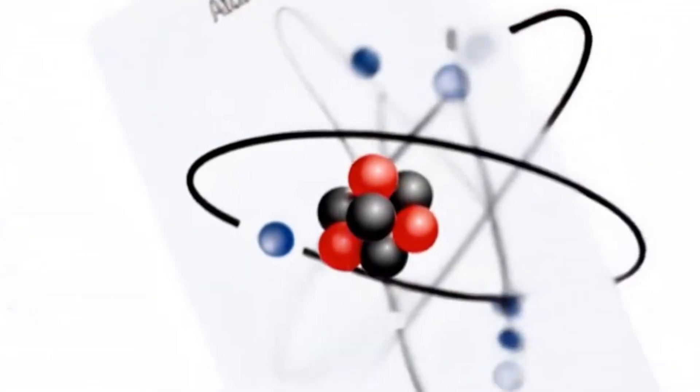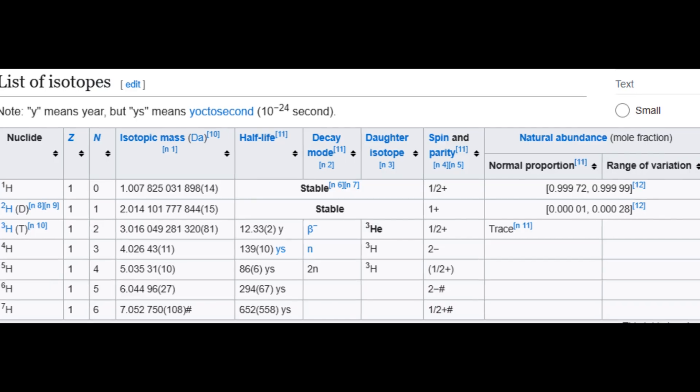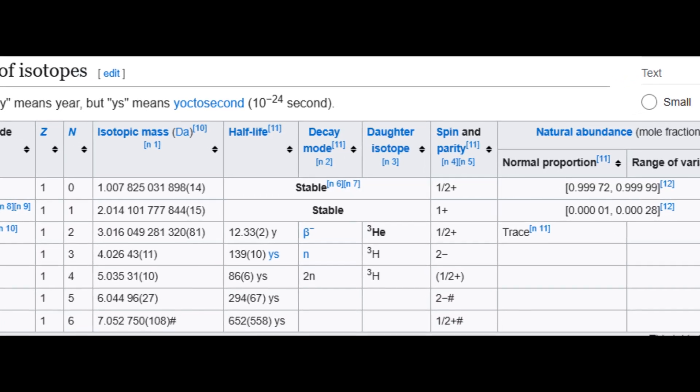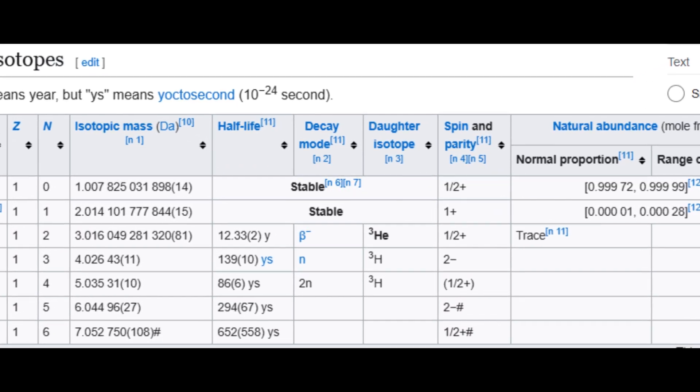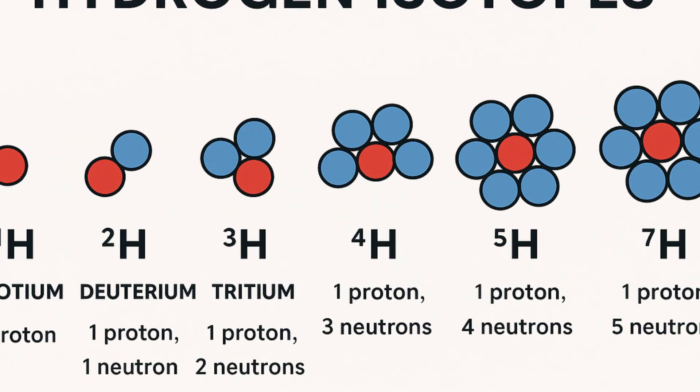But things get weirder as you keep adding neutrons. Enter hydrogen-6, one proton and five neutrons. This thing shouldn't really exist. Neutrons without enough protons to glue them in place usually fall apart quickly.